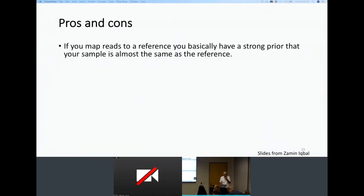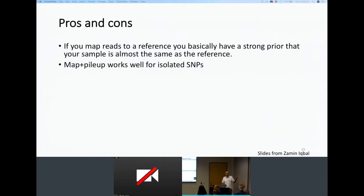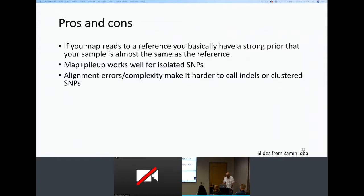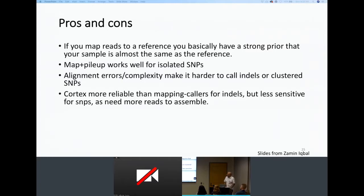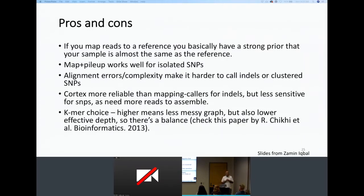Some pros and cons of Cortex: when using mapping approaches, you have a huge bias from the reference — if a new genome looks very different, mapping fails. Mapping-free methods like Cortex do a better job for indels and structural variations, while mapping methods do better for SNPs. One important consideration for de Bruijn graphs is the choice of k-mer size — there are papers, including one in Bioinformatics, that guide you in selecting the optimal k size for your assembly.